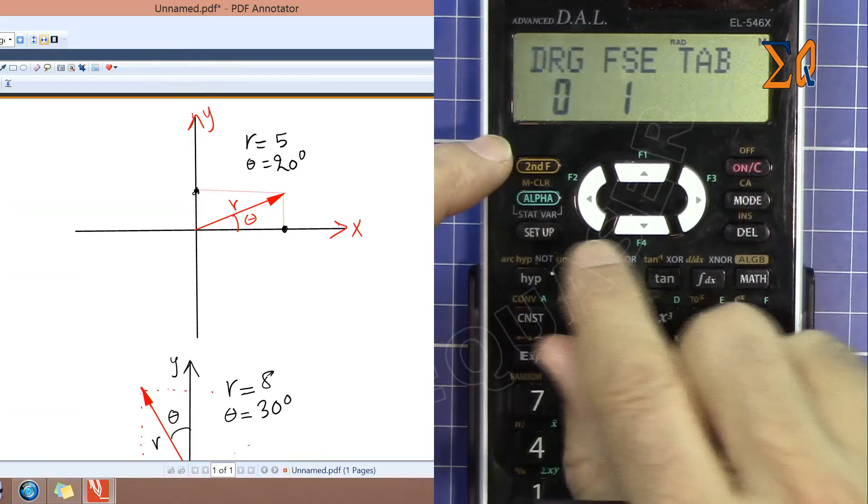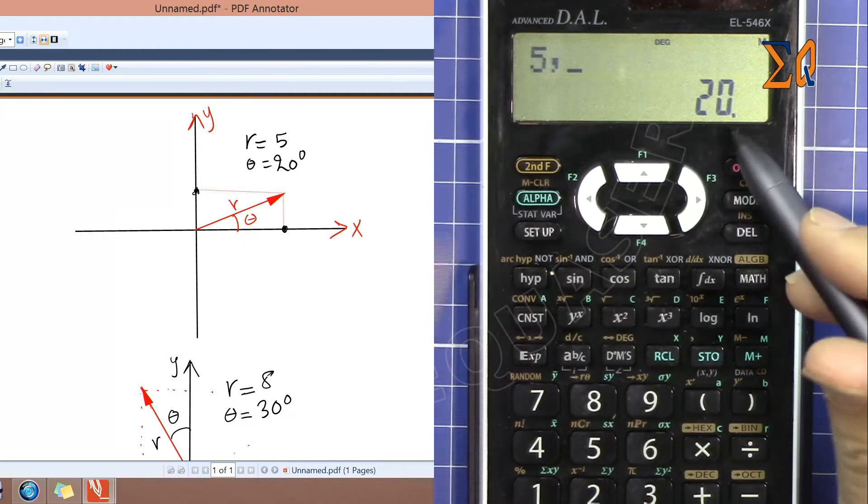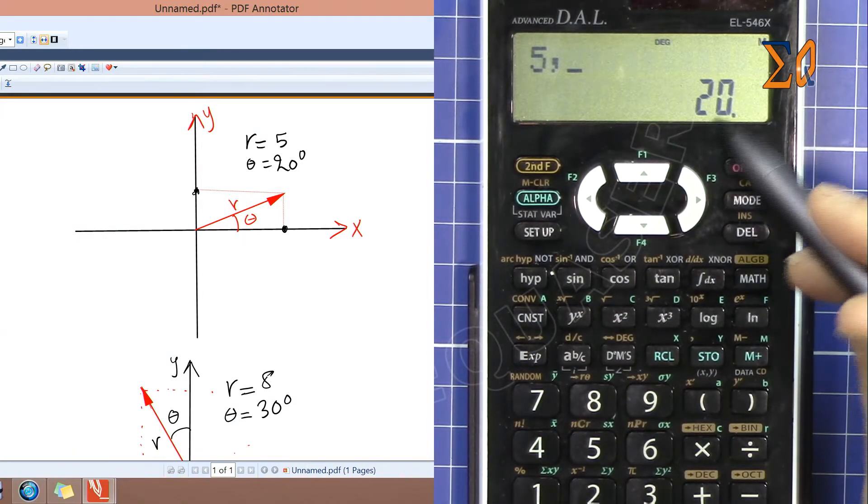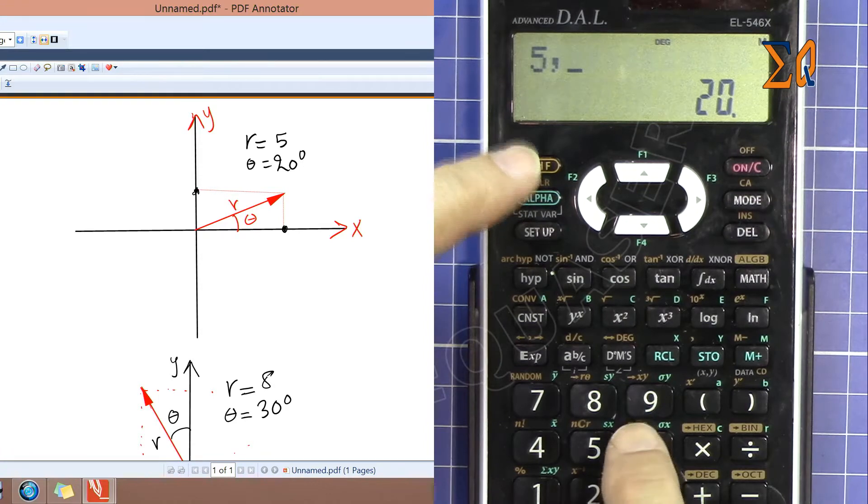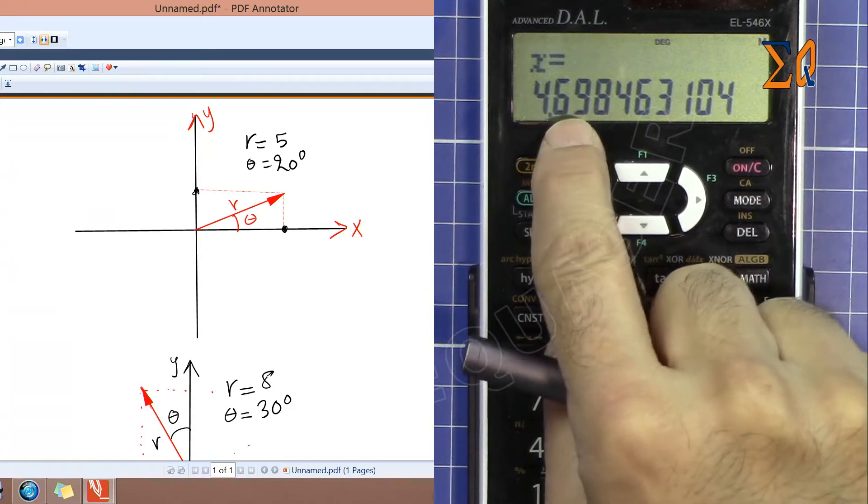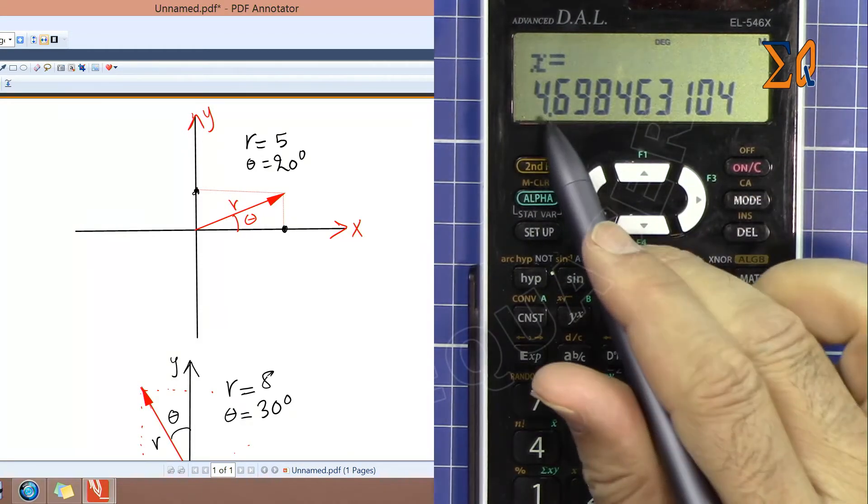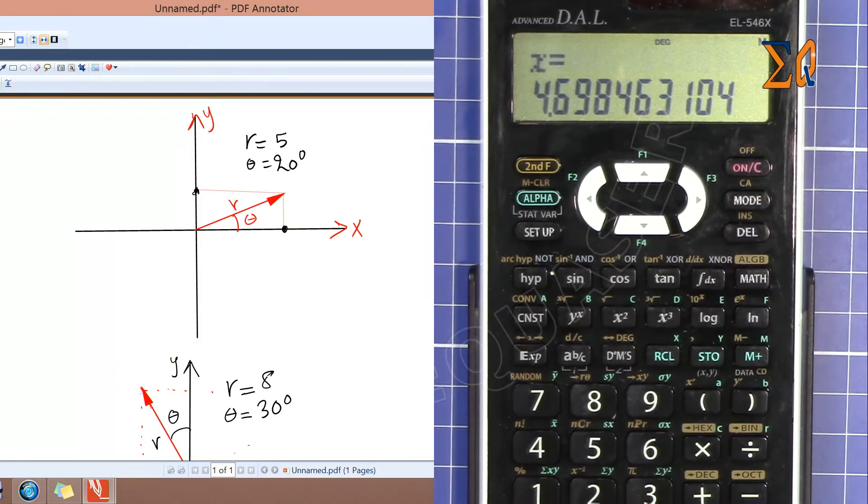Now this is 20. At this point just press second function and X, so you get second function and 9, and you get 4.69. So X is 4.69.